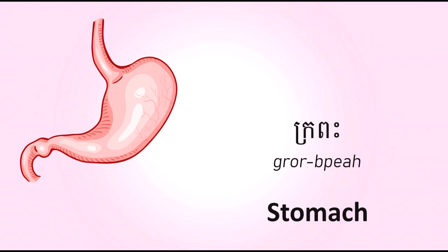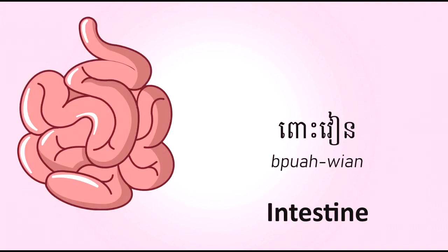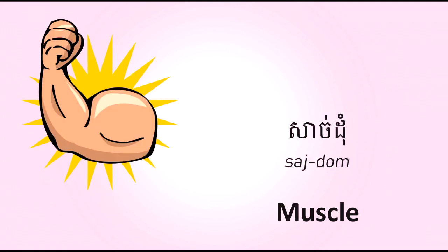Stomach — Grop. Intestine — Pัวเวียน. Muscle — Sạch đồng.